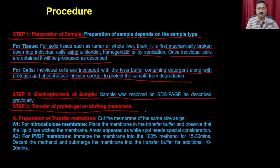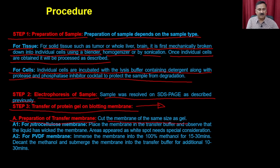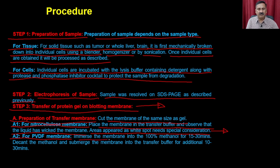In step three, you transfer the gel onto the blotting membrane — this is a very important and crucial step, as the quality of transfer decides the quality of the western blot. First, prepare the transfer membrane: cut the membrane to the same size as the gel. For nitrocellulose membrane, place the membrane in transfer buffer and observe that liquid has wetted the membrane; any white spots need special consideration.